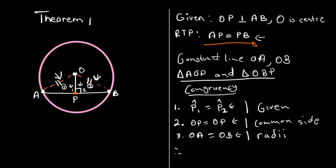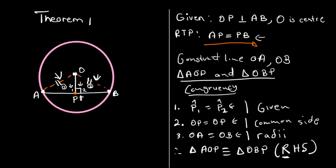We can conclude and say triangle AOP is congruent to triangle OBP. Because there's a right angle involved, we use the Right Hypotenuse Side rule (RHS). The R means the right angle which is 90 degrees, the H means hypotenuse — meaning we've proven the side of the hypotenuse which is the radii — and the S is the side, which is the common side OP.